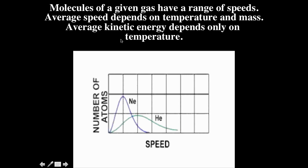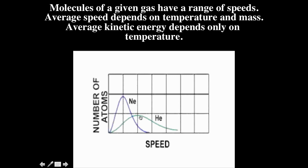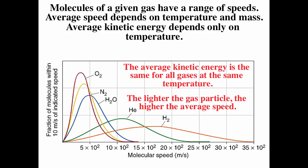Kinetic energy is one-half mv². Here we have neon and helium plotted as number of atoms versus speed. They're at the same temperature, so they have the same average kinetic energy. The helium has a higher average speed because it's lighter — since kinetic energy is one-half mv², its mass is smaller, so it's going to have a higher speed. The lighter, the faster. All gases have the same average kinetic energy at the same temperature, but the lighter gas particles will have a higher speed.